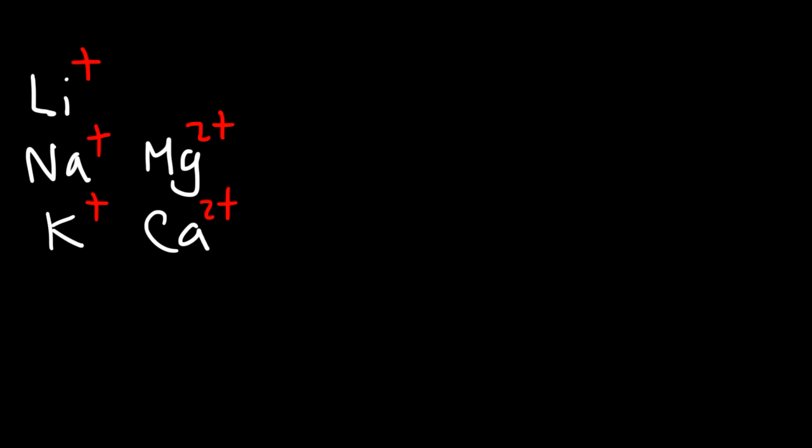In the middle, you have transition elements, which can have variable charges. We're not going to focus on those too much. But moving on to group 13, also known as group 3A, you have elements such as aluminum, and this element has a 3 plus charge.